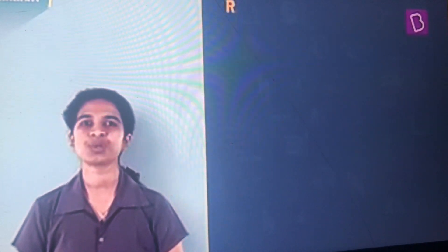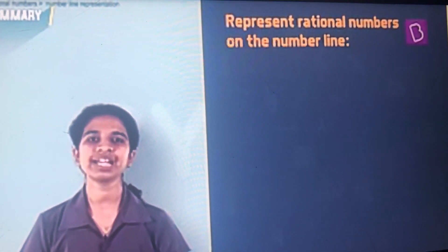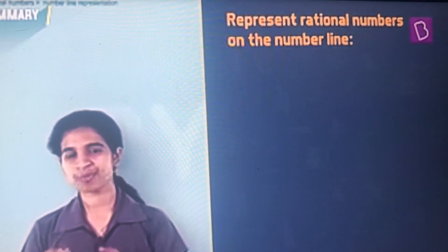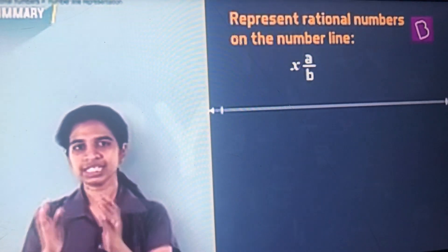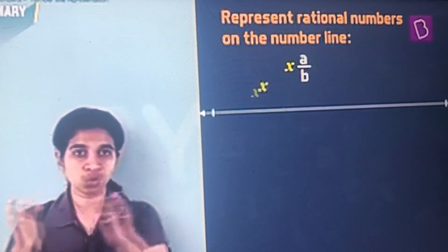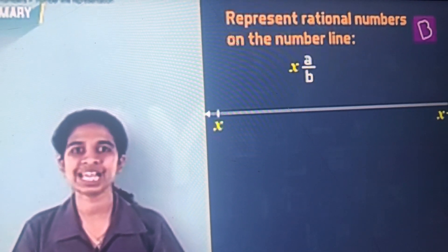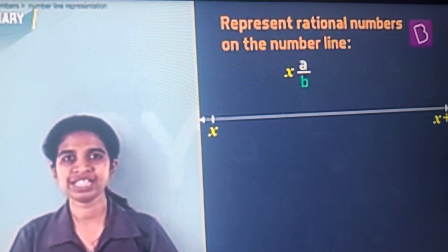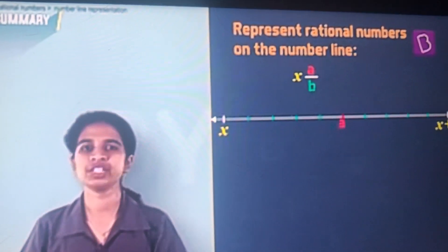Finally, we saw how to represent rational numbers on a number line. First, represent it as a mixed fraction. The integer portion tells you which two integers the rational number lies between. The denominator tells you how many parts you need to divide the line.